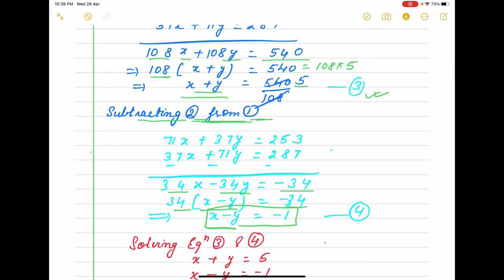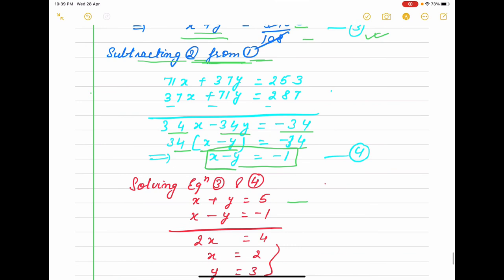We have got two equations: x+y = 5 and x-y = -1. Now we simplify it. 2x = 4, x = 2, y = 3. This will be your answer.